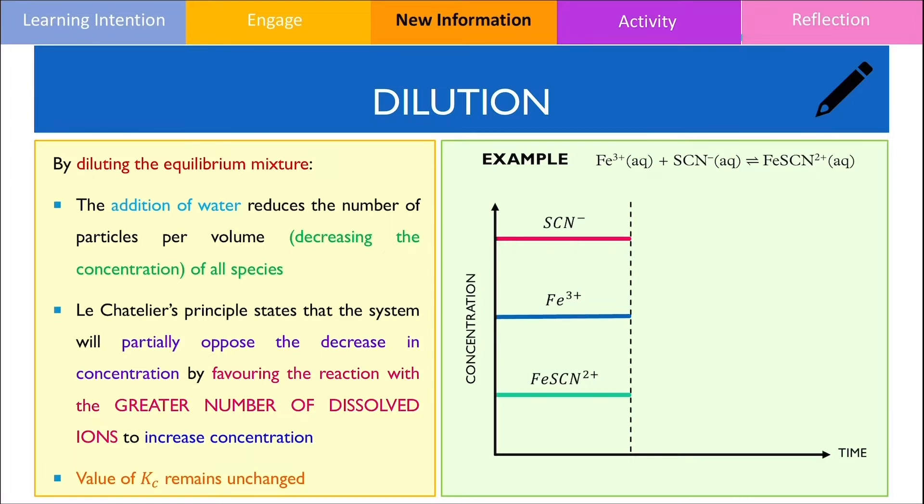If we were to dilute the following reaction mixture, the concentration of each ion decreases and this is reflected by the sudden drop in concentration as shown in the graph. Please note that substances with higher concentrations will be impacted more compared to substances with lower concentration, which is why the concentration of the SCN- ion drops more compared to the other two ions.